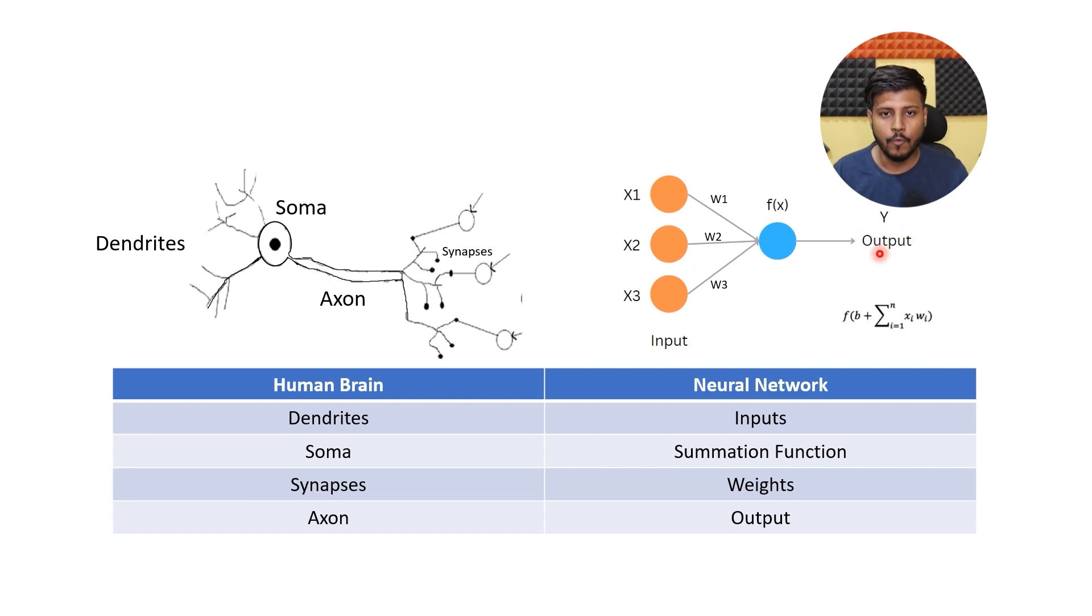For the signal to be transmitted from one artificial neuron to another, we need a connection similar to the synapses in the human brain. In a Neural Network, this connection between artificial neurons is analogous to synapses. Synapses act as a bridge between neurons, allowing signals to be transmitted from the axon of one neuron to the dendrites of another neuron.